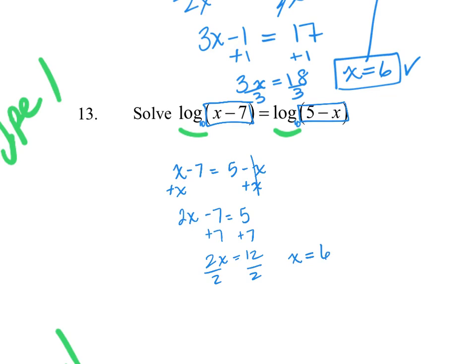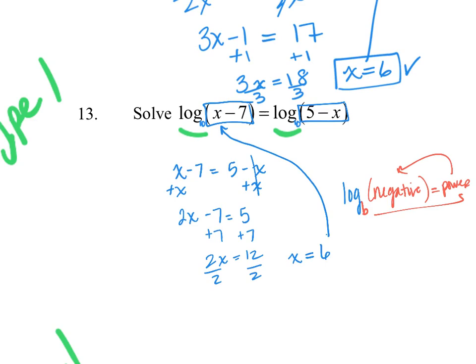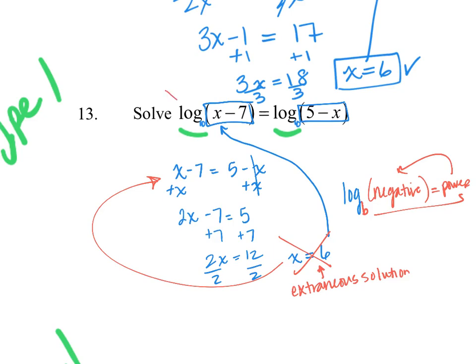Before boxing the answer, we check by plugging x equals 6 in: 6 minus 7 is negative 1. We cannot take the log of a negative number — there's no base that you can raise to any power and get a negative result, since negative powers just give fractions or reciprocals. So this is an extraneous solution, and there is actually no solution to this log equation.